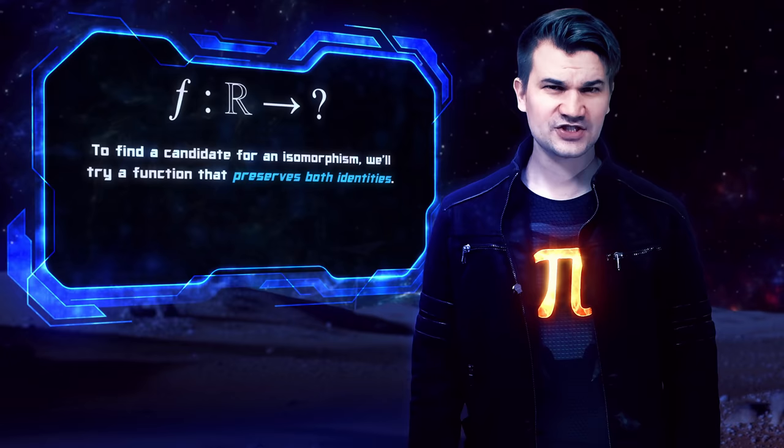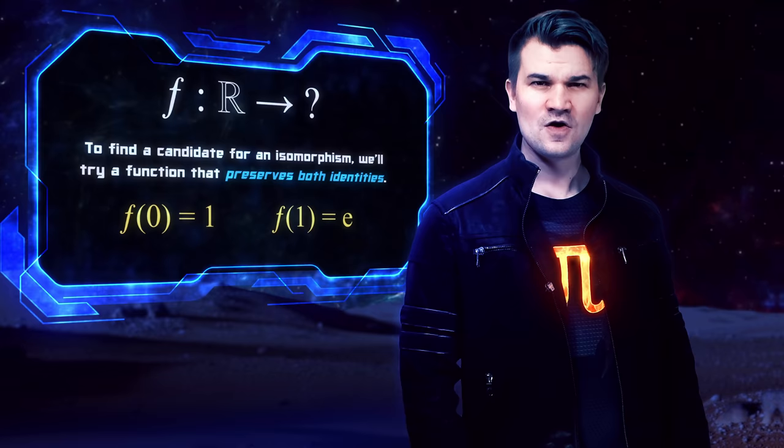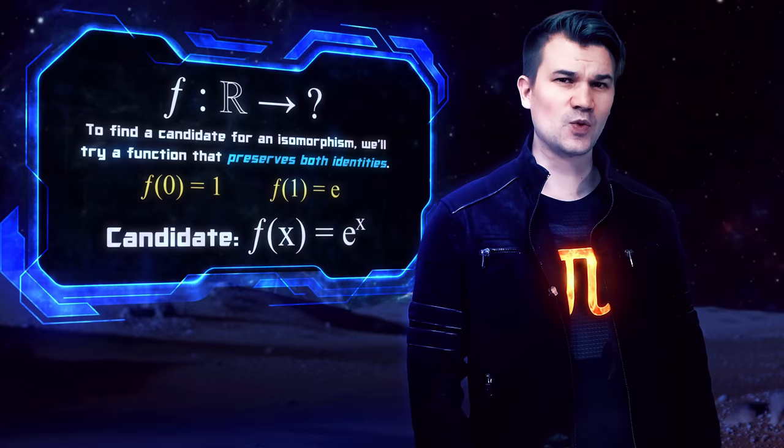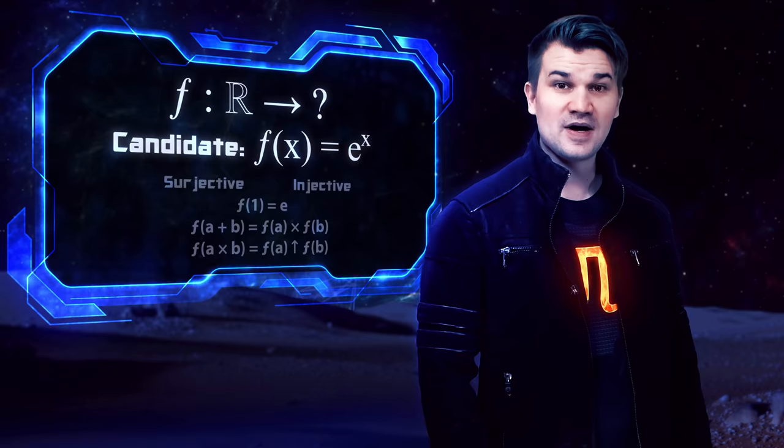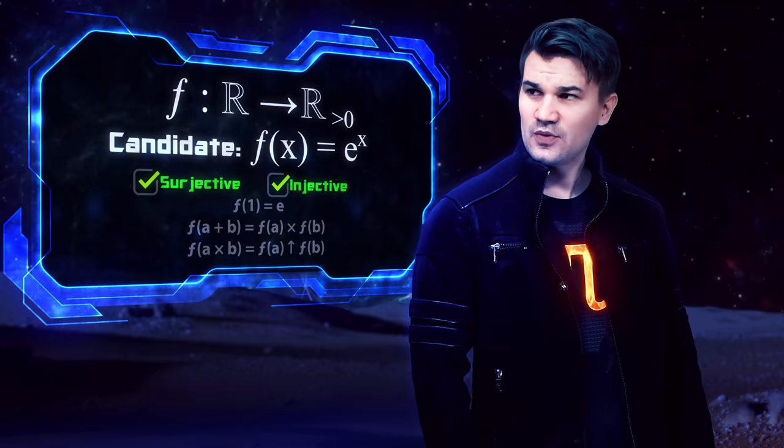So in this case, we're looking for a function F that takes 0 to 1 and 1 to E. So what's a good candidate for a function that does that? It's E to the X. So E to the X is going to be our candidate for a ring isomorphism. Now, the image of E to the X from the real numbers is the positive real numbers. So that's the underlying set of the ring. We know E to the X is injective and we know it preserves both identities because that's why we picked it in the first place.